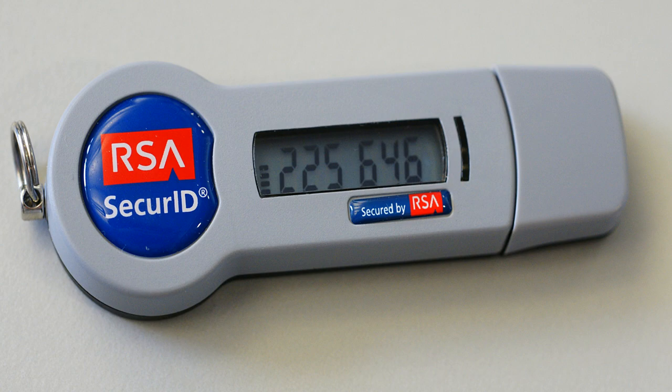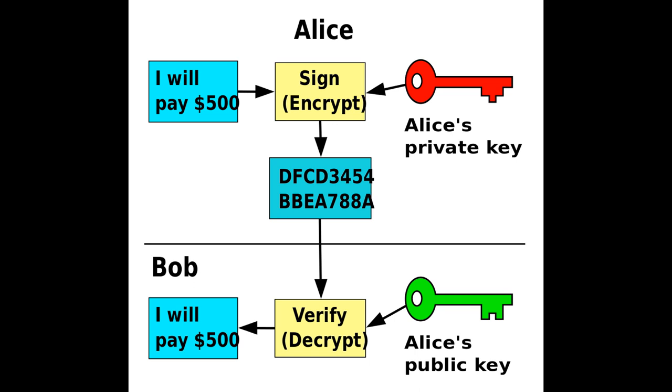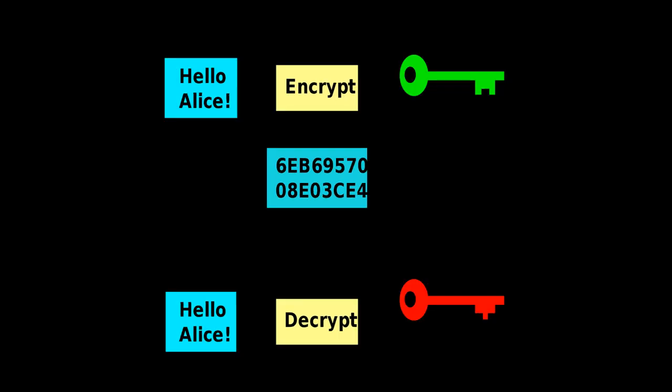In 1977, a generalization of Cocks's scheme was independently invented by Ron Rivest, Adi Shamir, and Leonard Adleman, all then at MIT. The authors published their work in 1978, and the algorithm came to be known as RSA, from their initials. RSA uses exponentiation modulo a product of two very large primes to encrypt and decrypt, performing both public-key encryption and public-key digital signatures. Its security is connected to the extreme difficulty of factoring large integers, a problem for which there is no known efficient general technique.